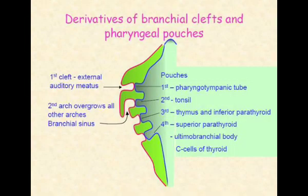Here you can see the endodermal pouches and the ectodermal cleft, and here the branchial sinus is forming.